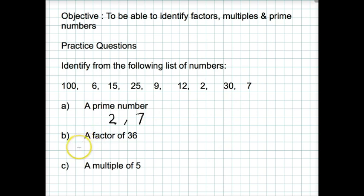The second one, part B. A factor of 36. A factor is a number that will divide exactly into another number. So we're looking for a number that will divide into 36 with no remainders. There's the first one, 6. 6 into 36 goes 6 times. There are no remainders. So 6 is a factor of 36.